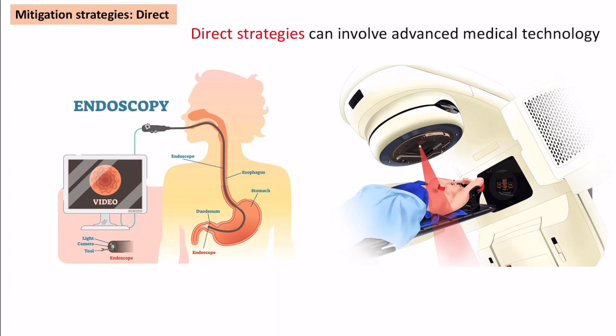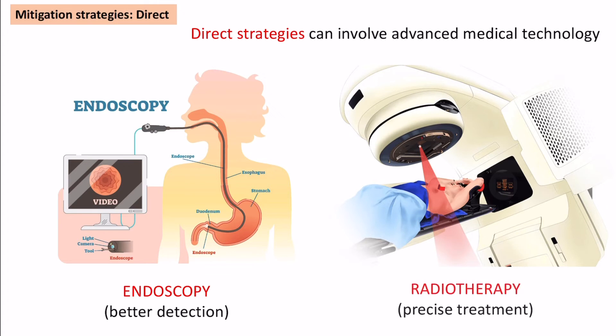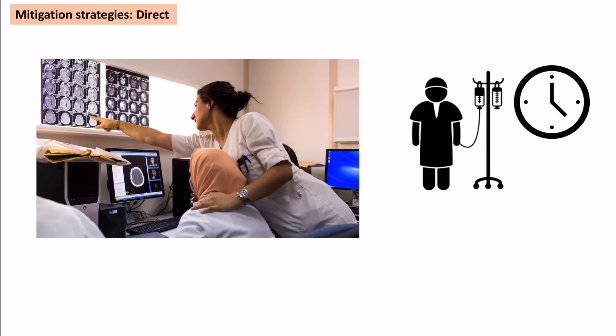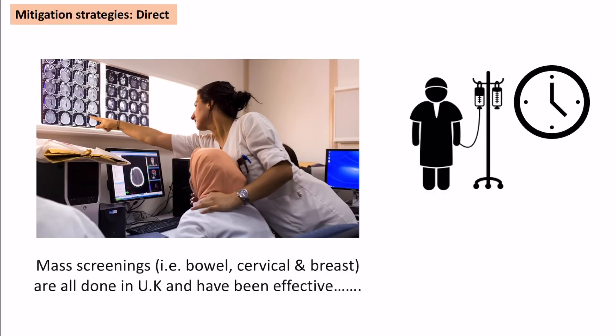Direct strategies often involve advanced medical technology. This could include endoscopes for better detection — putting a camera inside the body to locate cancerous cells — and more precise treatments such as radiotherapy targeted at just the cancer. There are also free mass screenings for bowel, cervical and breast cancer, meaning more people are seen and treated earlier.